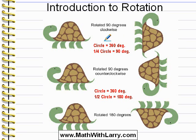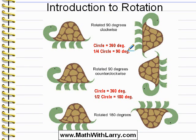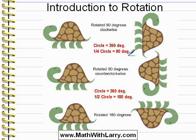To begin with, we define a circle as having 360 degrees — that's just something you have to remember. Now, if we take an object and we rotate it, which means twist it or turn it, if we do that a quarter of a circle, one quarter of 360 is 90. We do 360 divided by 4 and we get 90. So if we take an object and rotate it a quarter of the way around a circle, we say that that's a 90 degree rotation.